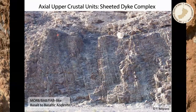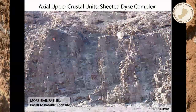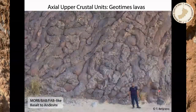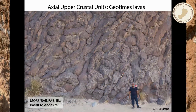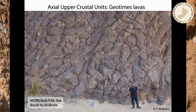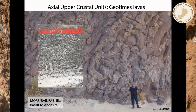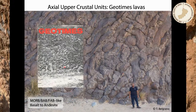Here are field photos of the axial crustal units. The sheeted dike complex — this outcrop is around five meters tall, with sheeted dikes running almost vertically. That fed the Geotimes lava unit; they're comagmatic, deriving from the same parental melt. This outcrop is incredibly famous — it featured on the 1975 cover of Geotimes magazine, which is why that lava unit has its slightly unusual name.